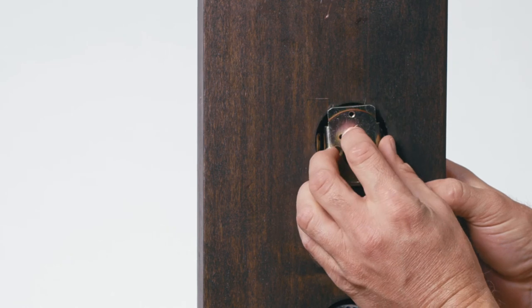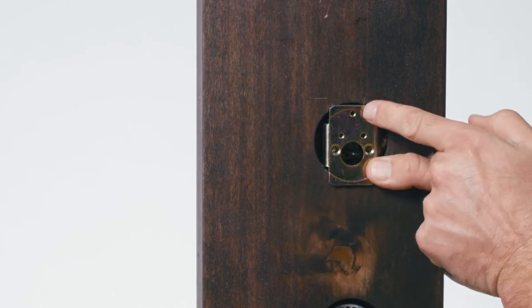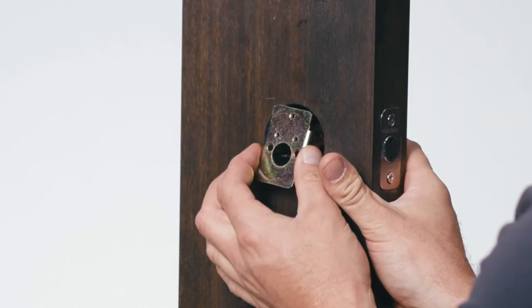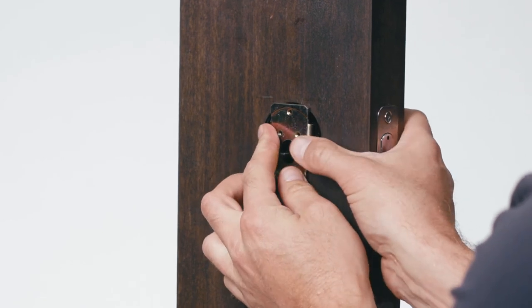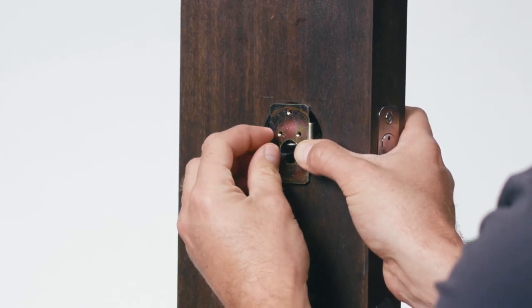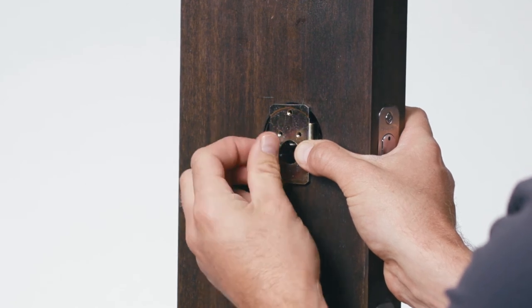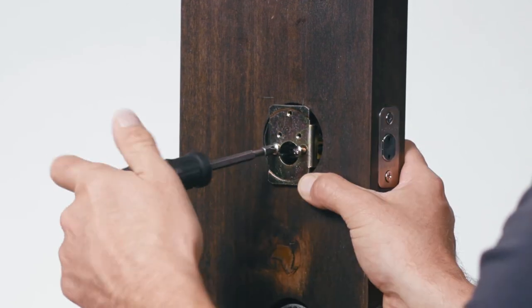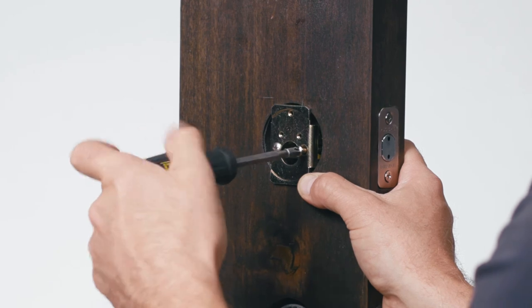Now locate the mounting bracket and orient it with the single hole towards the top. Ensure this part of the bracket is inside the borehole. Insert the deadbolt screws through the bracket, through the latch, and into the deadbolt cylinder. Tighten the screws until snug. No need to over tighten.